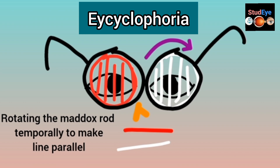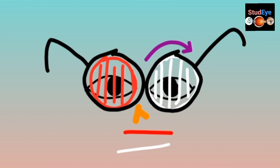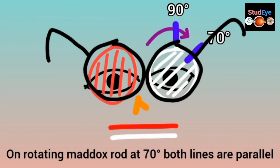To summarize: rotating the Maddox rod toward the nose to achieve parallel lines indicates incyclophoria, while rotating it toward the temporal region indicates excyclophoria — in the eye for which you are rotating the Maddox rod. In this example, the white line was tilted, so we rotated the white Maddox rod temporally, and the patient confirmed the lines were becoming parallel, indicating excyclophoria in the left eye.